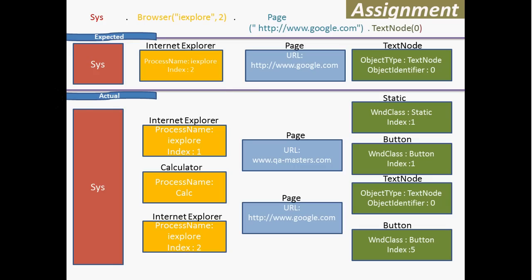Here is an assignment: there is an expected window that is a browser window, and in that there is a text node. Try to analyze your understanding by using the actual object properties provided below.